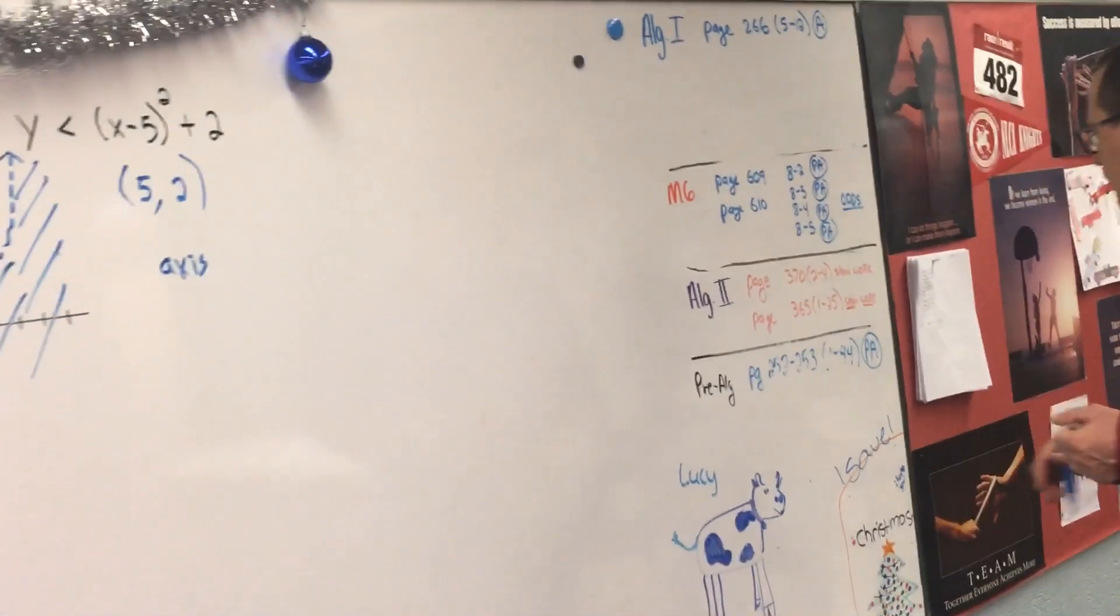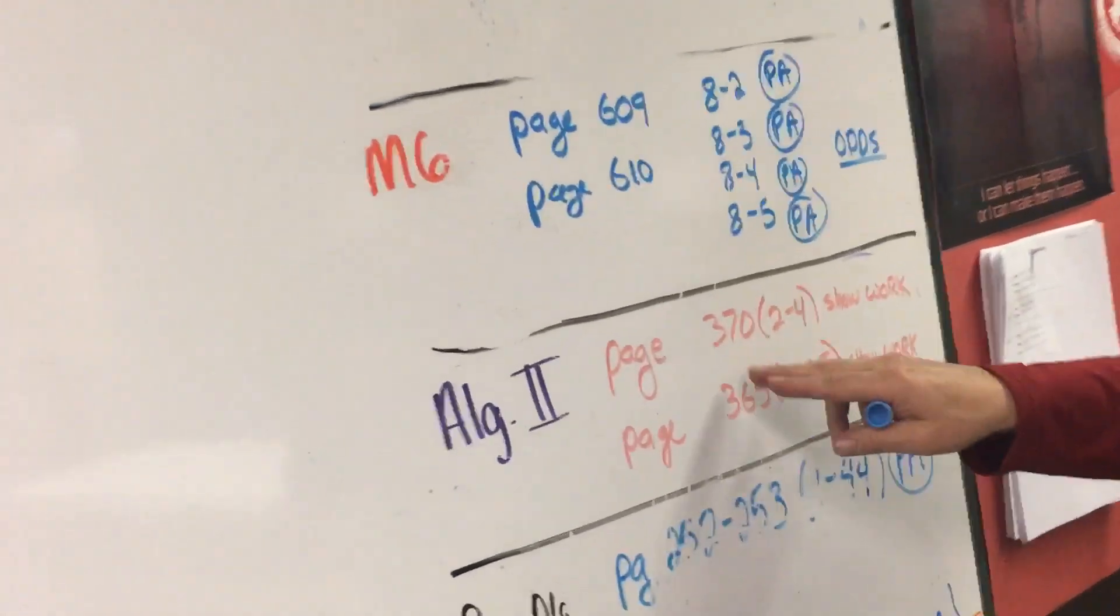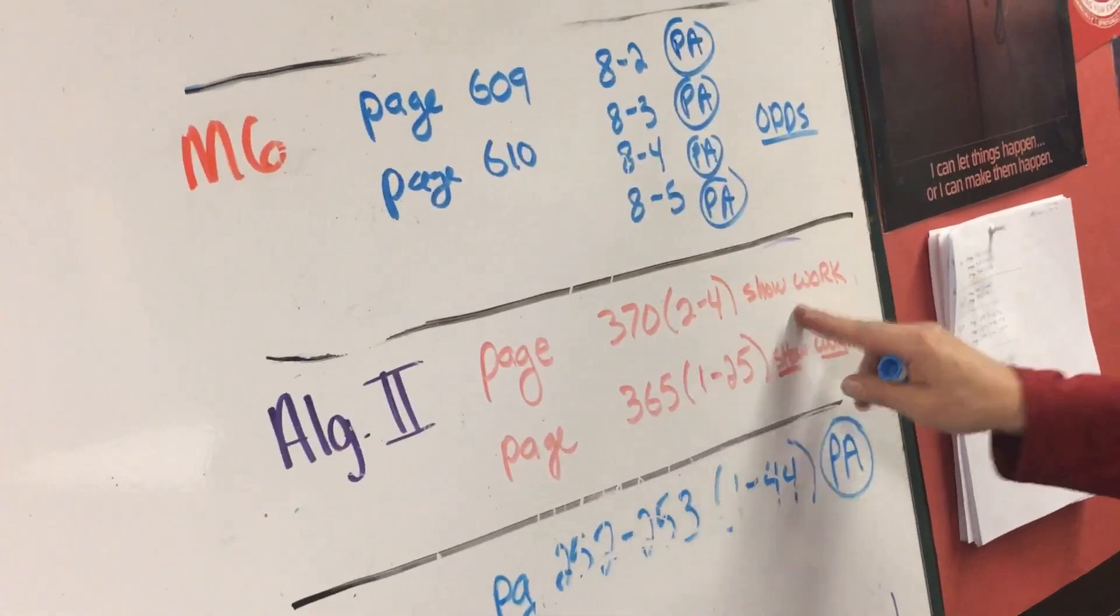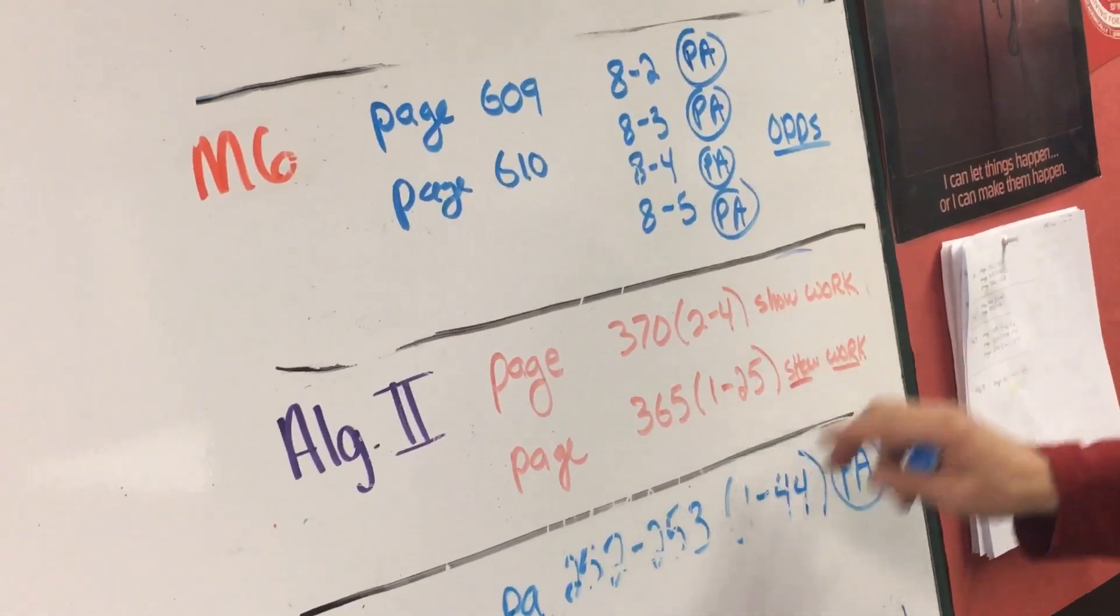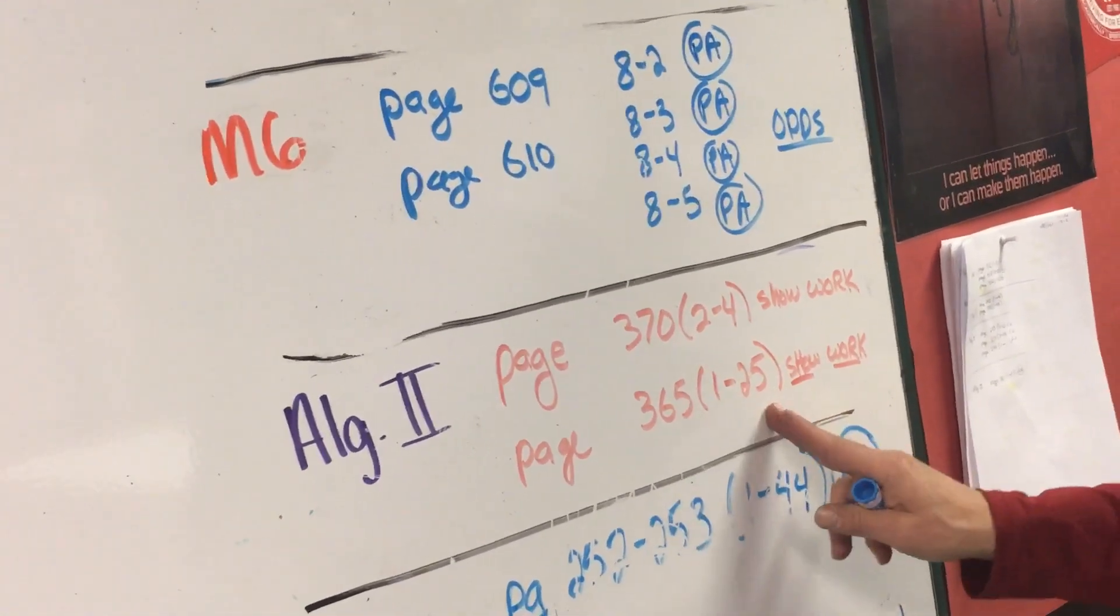Your assignment is going to be here. Maybe this is a little bit harder to read. Page 370, 2-4, that's like what we did today. Page 365, 1-25 is review. That's just the stuff that will be on your quiz on Friday.